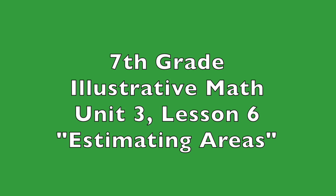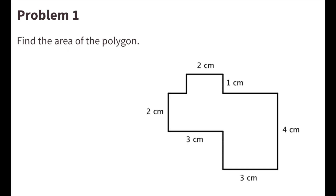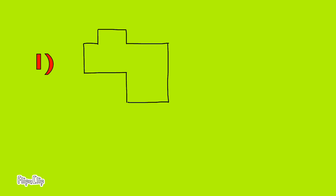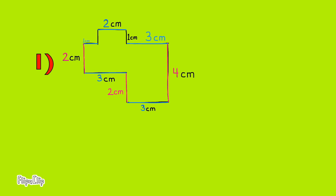7th grade Illustrative Math, Unit 3, Lesson 6: Estimating Areas. Number one: find the area of the polygon. We've been provided with some lengths and we can use those lengths to help us figure out the missing lengths. For example, two centimeters plus two centimeters equals four centimeters. Now that we've found all the missing lengths, we can divide this into rectangles.